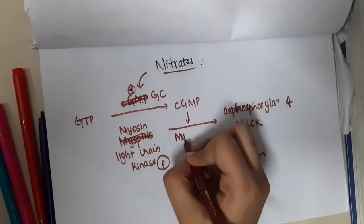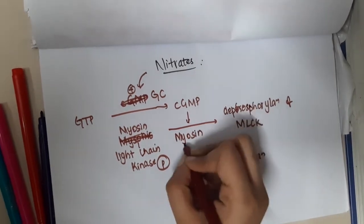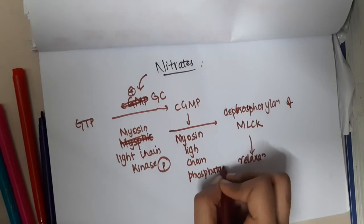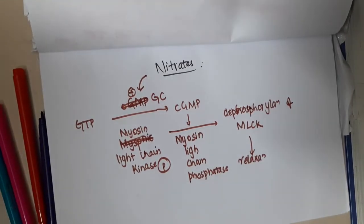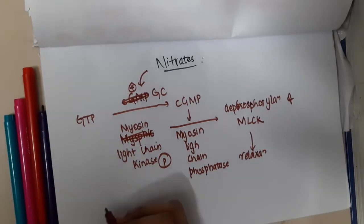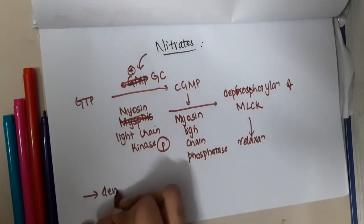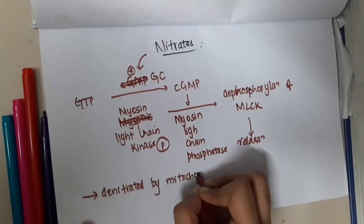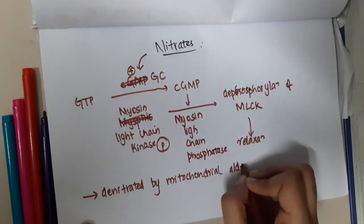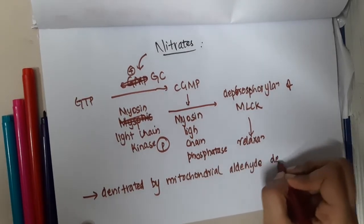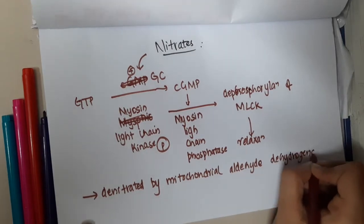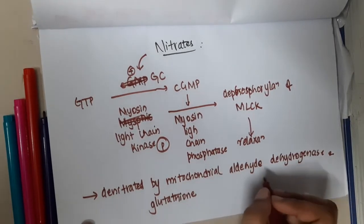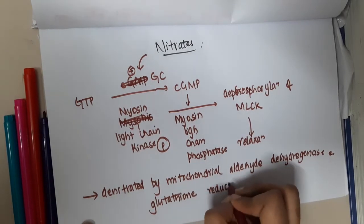One more important thing about nitrates: they are denitrated by mitochondrial aldehyde dehydrogenase and also glutathione reductase.